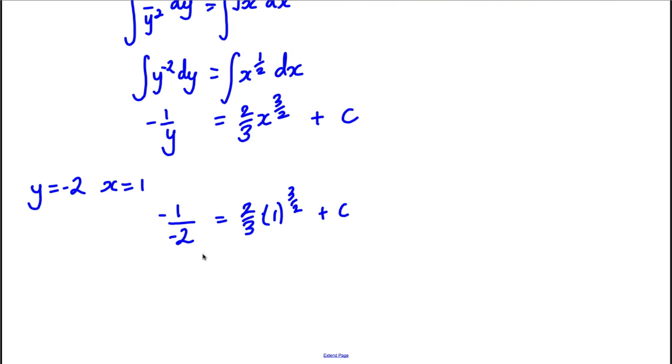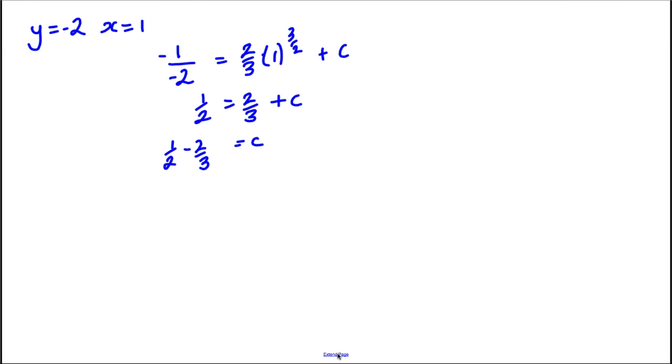So this here, this would be a half. On this side here, we would simply have 2/3 + c. So c is clearly 1/2 - 2/3, and obviously 1/2 - 2/3 = -1/6. So in this case, we'd have c = -1/6.